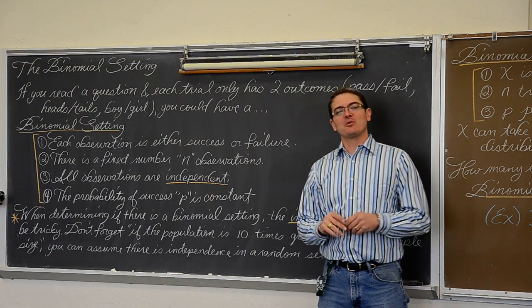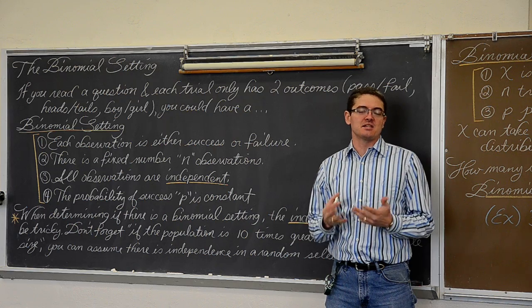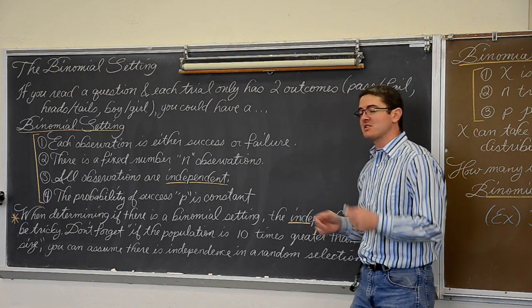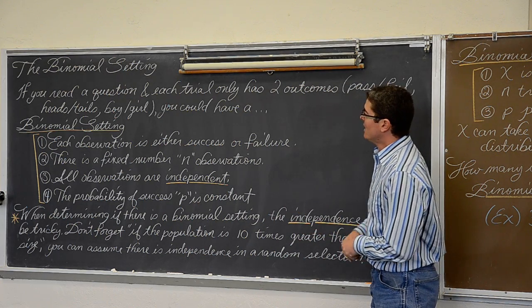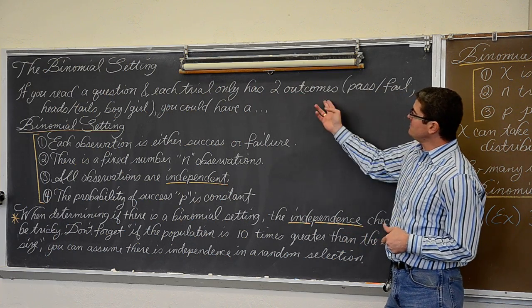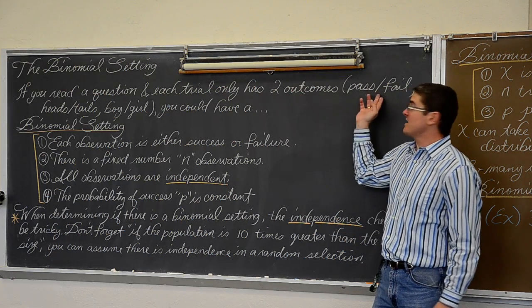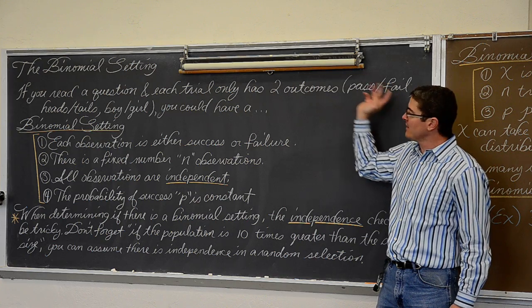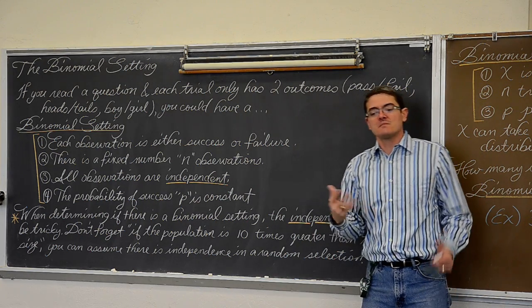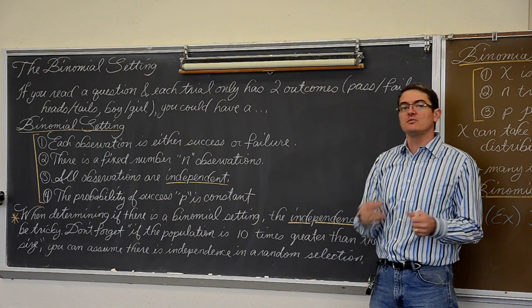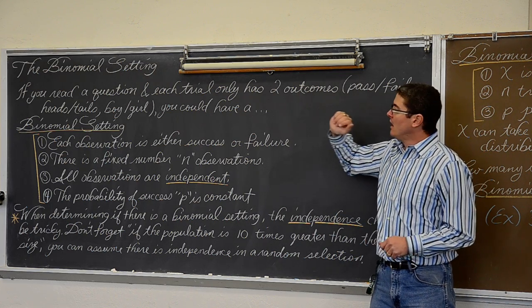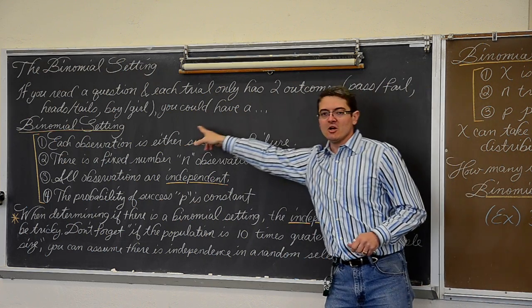We are going to start setting up or discussing in statistics the binomial setting. So let's get started. If you read a question and each trial only has two outcomes such as pass/fail, heads/tails, boy/girl, success/failure — two outcomes — you could have a binomial setting.